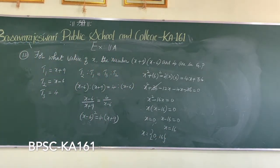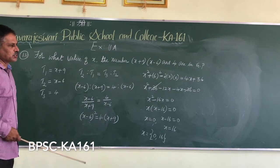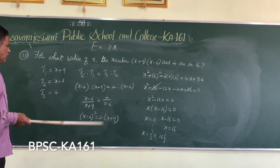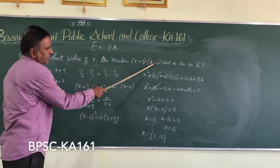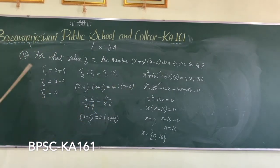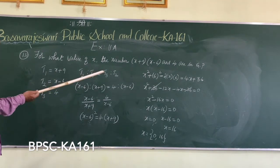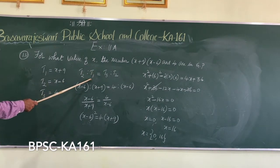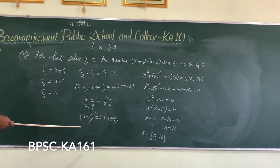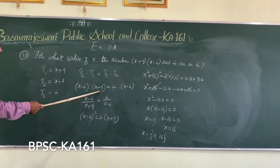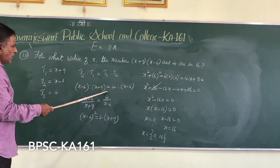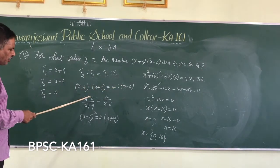To recap: for what value of X are the given numbers in geometrical progression? The first term is X plus 9, the second term is X minus 6, and the third term is 4. Since it is a GP, the ratio of the second term to the first equals the ratio of the third term to the second: (X minus 6)/(X plus 9) = 4/(X minus 6).